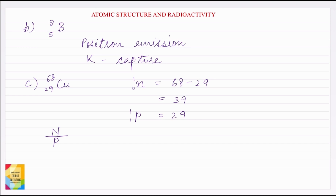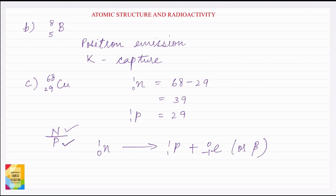In order to get stability, Copper will undergo beta emission. In beta emission, a neutron gets converted into a proton and an electron (the beta particle). So the number of neutrons in the nucleus decreases and the number of protons increases, causing the N/P ratio to decrease and the nucleus to become stable. Therefore in case of C — Copper with atomic mass 68 and atomic number 29 — the type of emission is beta emission.